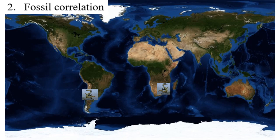The second evidence is fossil correlation — fossils and other evidence of prehistoric life. Identical fossils have been found in rocks on either side of the ocean. For example, Mesosaurus, an ancient reptile that lived in shallow freshwater, has fossils found in only two places in the world: the eastern coast of South America and the western coast of Africa.